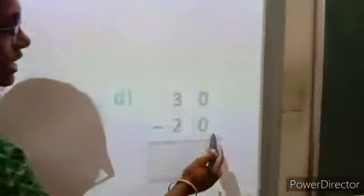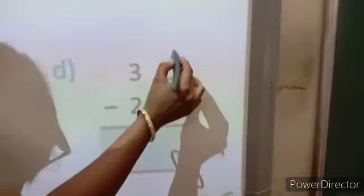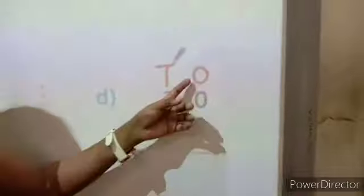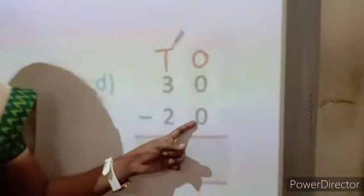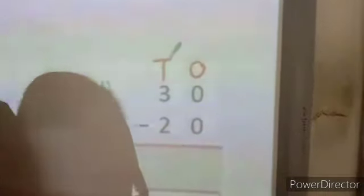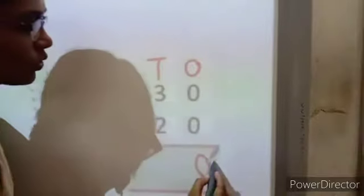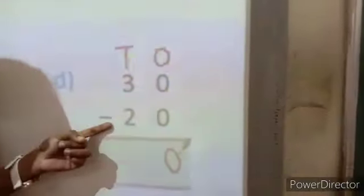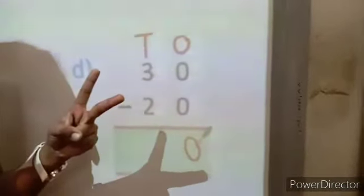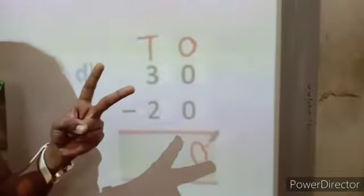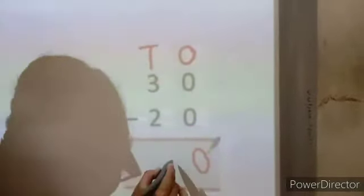Next sum, we are going to subtract 30 minus 20. In the 1's place we are having two 0's. 0 minus 0 means nothing, so 0. Next we are having 3 minus 2 in the 10's place. 3 in your mind, 2 in your fingers. 3's before number is 2, 1. So the answer is 1. 30 minus 20 equals 10.